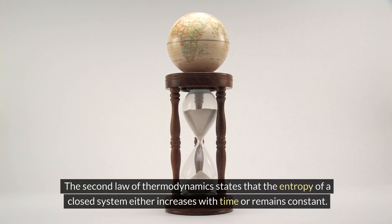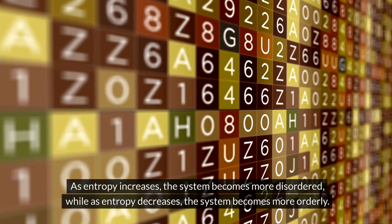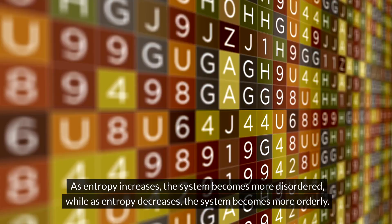The second law of thermodynamics states that the entropy of a closed system either increases with time or remains constant. As entropy increases, the system becomes more disordered, while as entropy decreases, the system becomes more orderly.